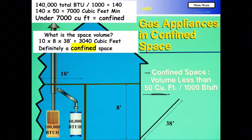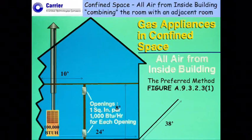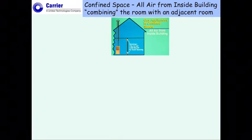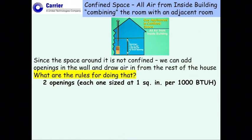In confined space situations, I've seen block-vent limits and other safety limits fail and open up. The preferred solution is to avoid bringing in outside air — equivalent to opening a window — and instead try to use air from inside the building by combining the confined mechanical room with an adjacent room.